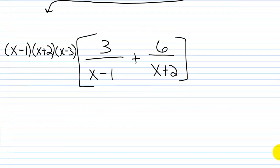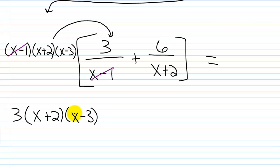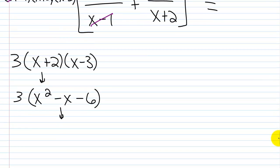Using the distributive property, we multiply the LCD by the first term. The (x minus 1) cancels, leaving 3 times (x plus 2)(x minus 3). FOILing that out: x squared minus x minus 6, then multiplying by 3 gives 3x squared minus 3x minus 18.